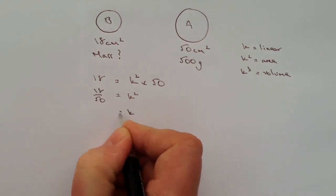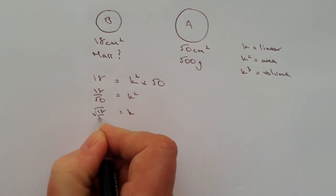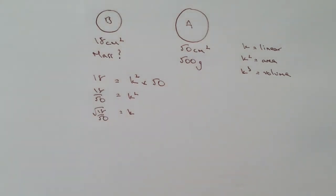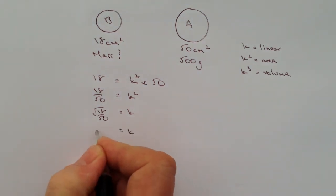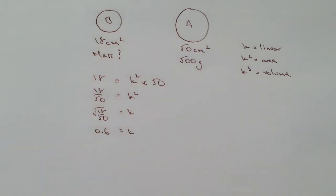Therefore K equals the root of 18 over 50 and if I put that into a calculator I'm going to get the value of K to equal 0.6. Well that's great because now I can use that information when I'm working out the mass because again I've got a similar relationship.